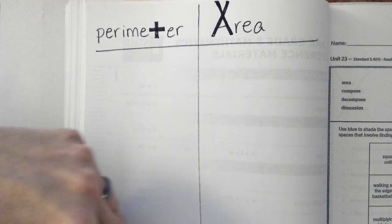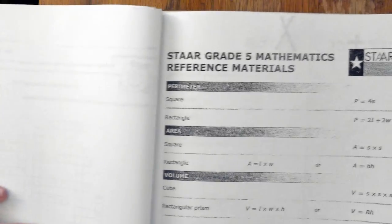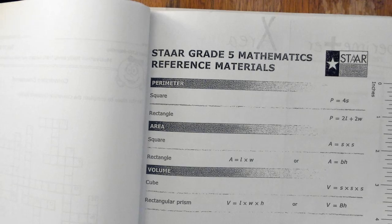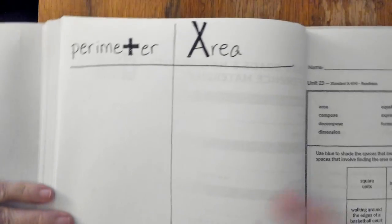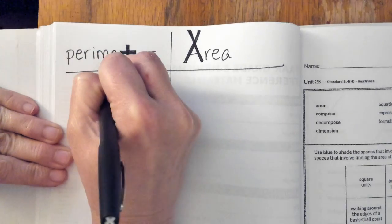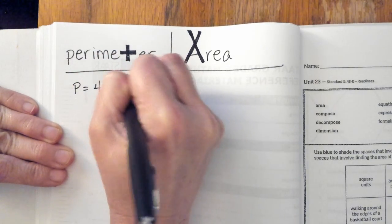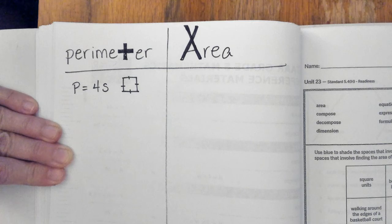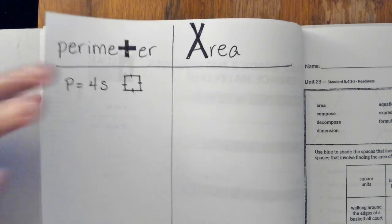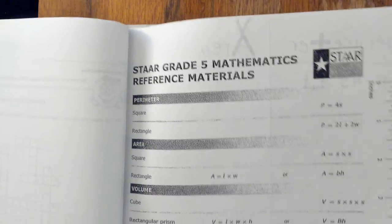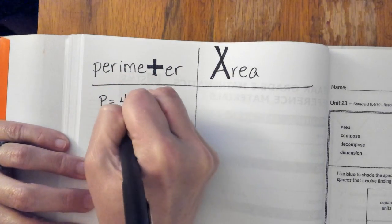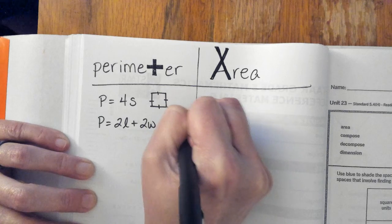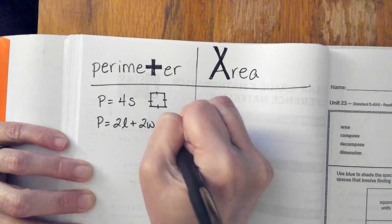You also have, if you turn back on your STAAR reference materials, you have formulas for perimeter and area just in case you forget. So perimeter for a square is 4S, because with a square you can add up all four sides, or because they are the same, you can do four times the number of sides. And then perimeter for a rectangle is 2 times the length plus 2 times the width. And that is because the sides of a rectangle, opposite sides, are the same length.